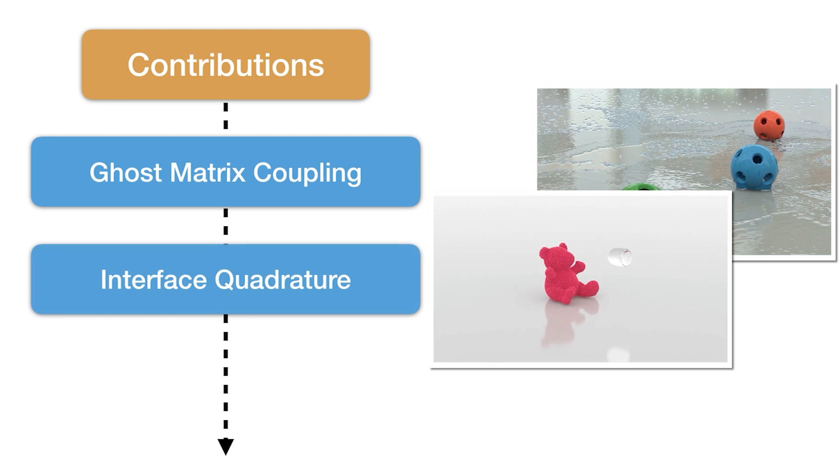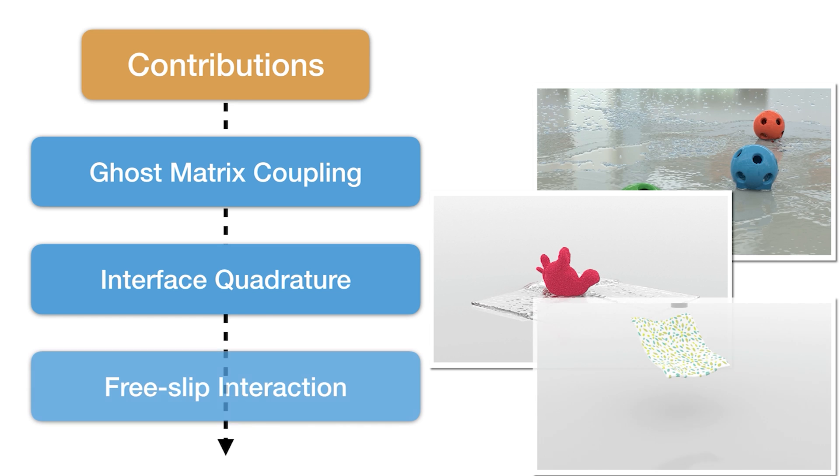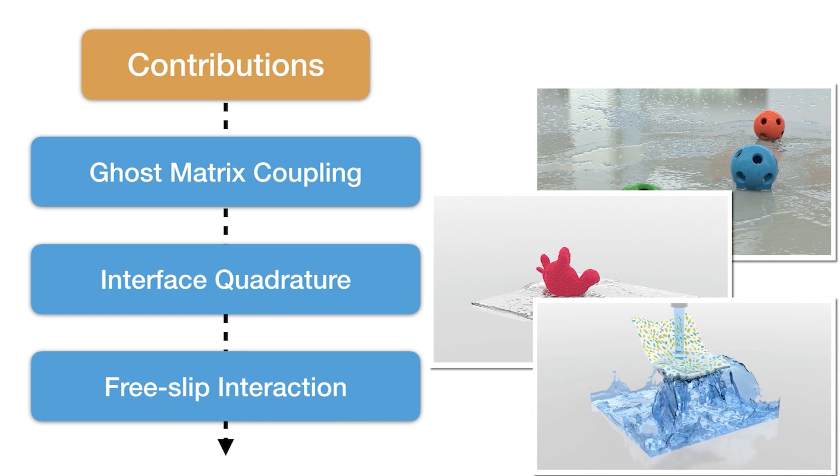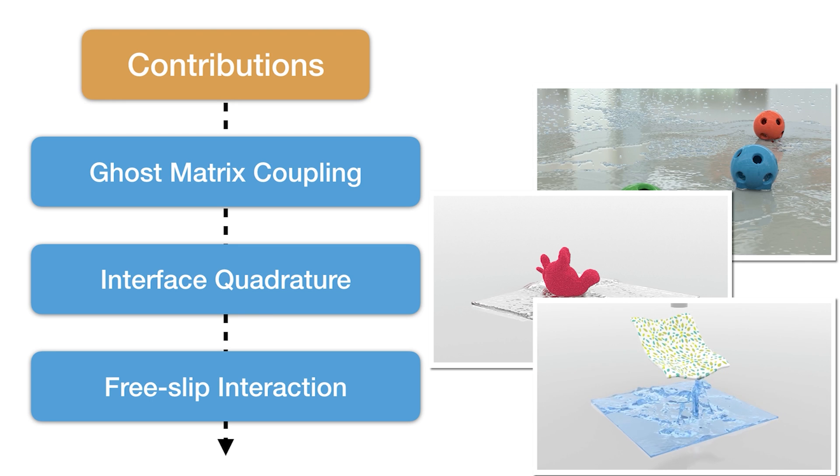For properly enforcing the free-slip boundary condition at the moving interface, we design a novel interface quadrature cut-cell MPM formulation, or IQMPM. Our framework also naturally supports discontinuous tangential velocities at the solid and fluid interfaces.